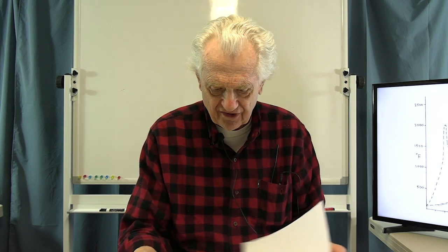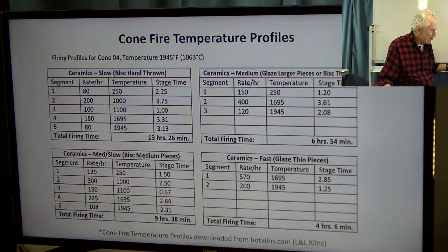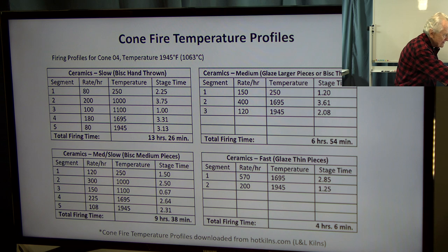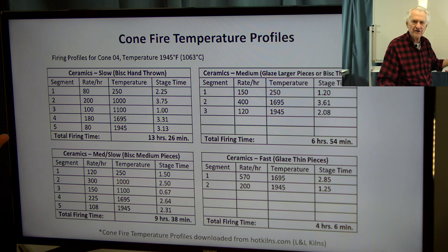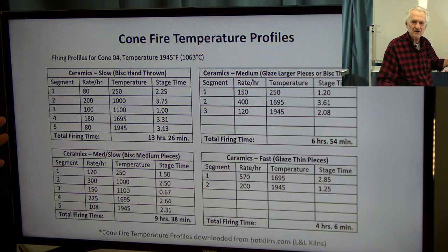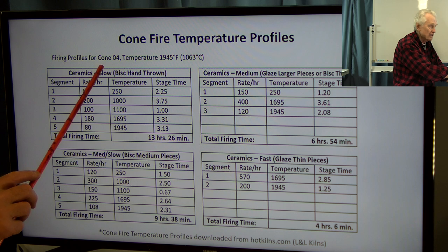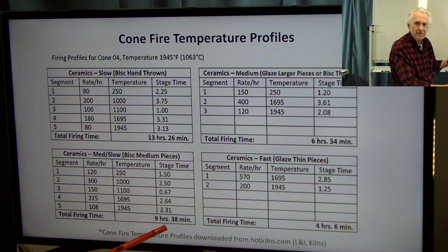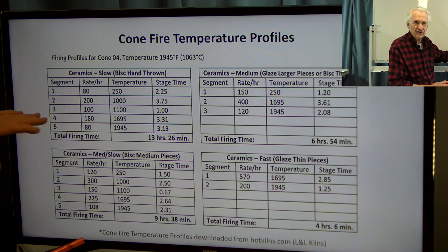Here are a couple of actual examples of firing schedules. These charts were taken from hotkilns.com, the website for L&L kilns. Just about all kiln manufacturers produce this type of information, and you can readily find it online. If you're looking to set up a schedule, you can use these as reference — even if you compare different manufacturers, the schedules won't be identical but they'll give you a good idea.